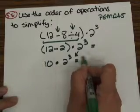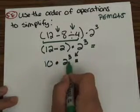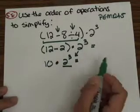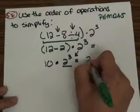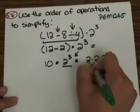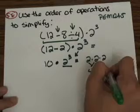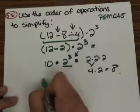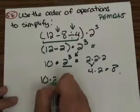Now before I can do 10 times this number, I have to work out this exponent first. 2 cubed is 2 times 2 times 2, which equals 8. So I'm really going to have 10 times 8, which is 80.